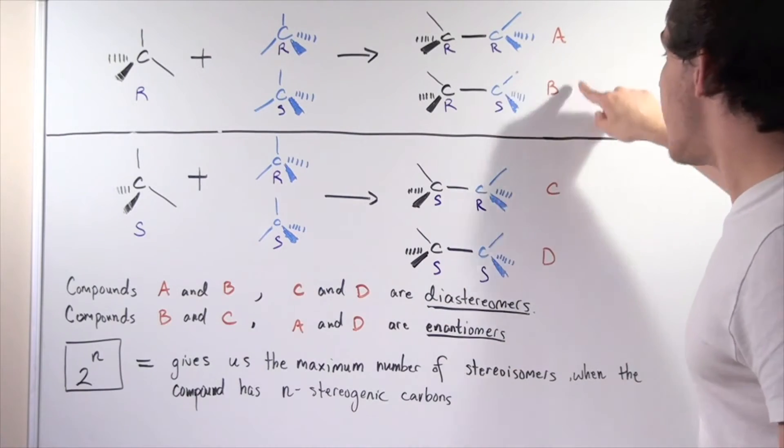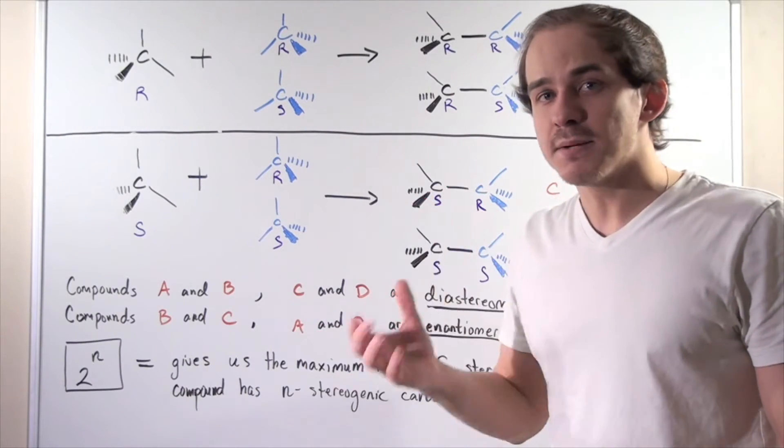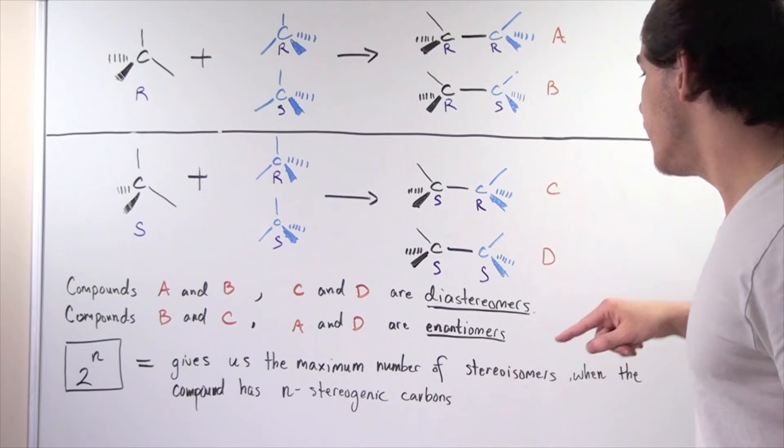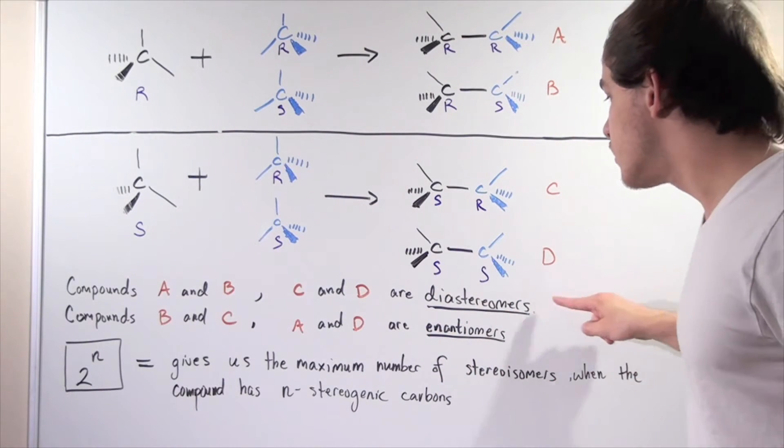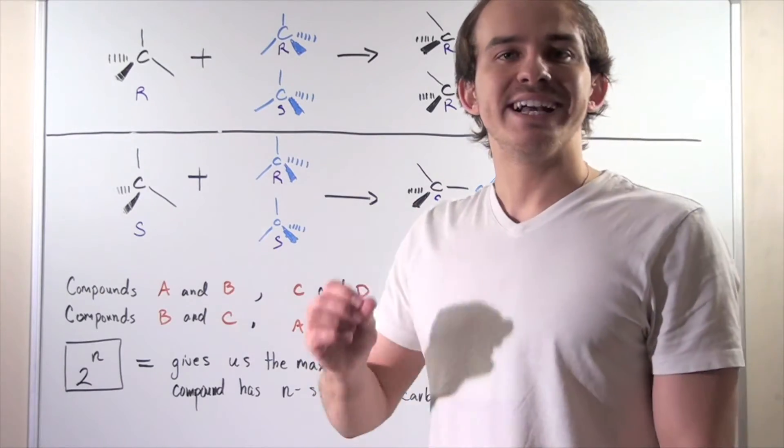We call these compounds A and B and C and D that are not enantiomers of one another, we call them diastereomers. So diastereomers are simply stereoisomers that are not enantiomers.